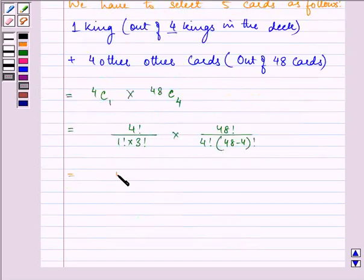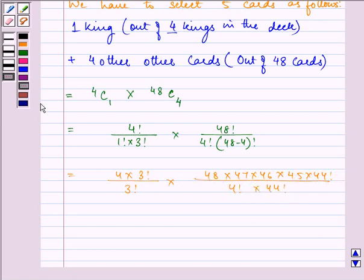Further, 4 multiplied by 3 factorial divided by 3 factorial, multiplied by 48 factorial divided by 4 factorial times 44 factorial.